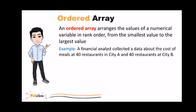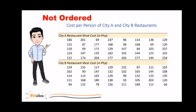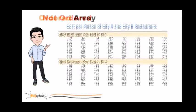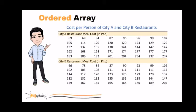For example, a financial analyst collected data about the cost of meals at 40 restaurants in City A and 40 restaurants in City B. This is the raw data for the example, and this is the ordered array version of the same data. This type of organization enables us to quickly see that the cost of a meal at City A is between 69 and 237 pesos.